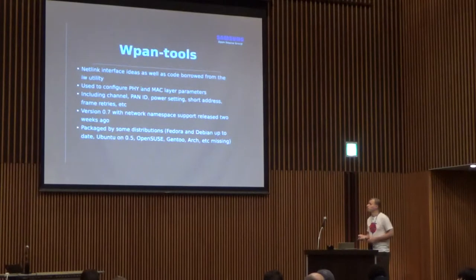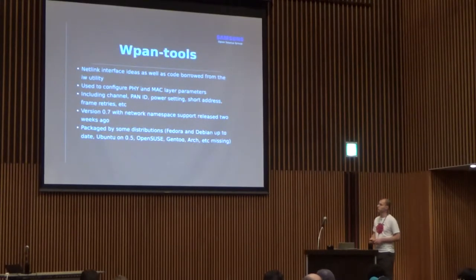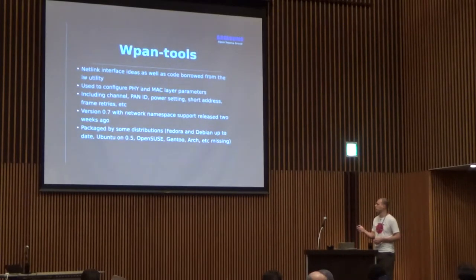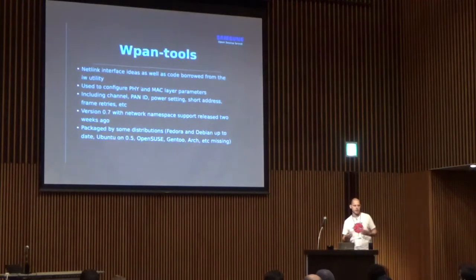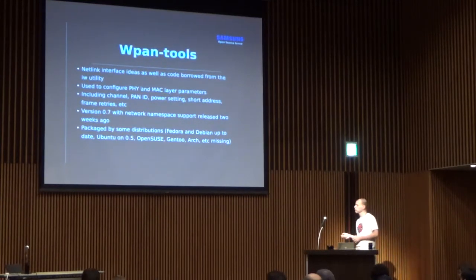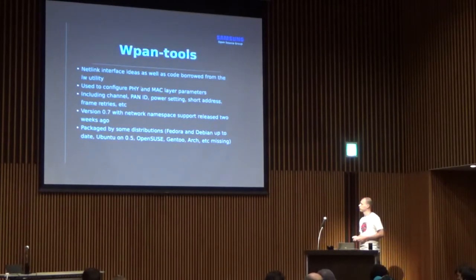Our netlink interface and user-space utility ideas are largely borrowed from the IW utility, since the problems are very similar. You use it to configure parameters of the PHY and MAC layer: the network ID, PAN ID, power settings, short and extended addresses, and how often the transceiver should retry sending a frame. The latest version released two weeks ago supports network namespaces. Some distributions ship the software already, but to be sure just compile it from source.